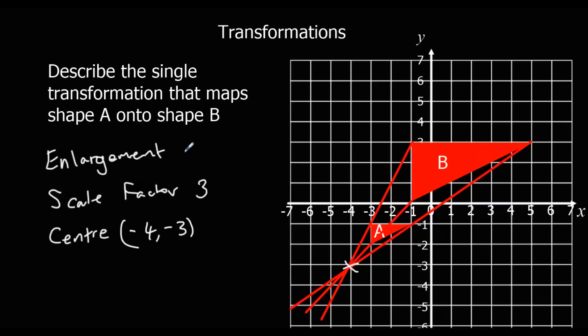So there are three bits of information we need to describe an enlargement. So that's three marks there.